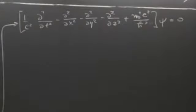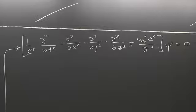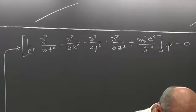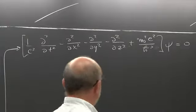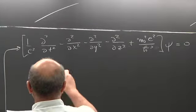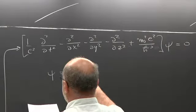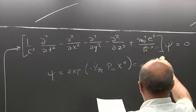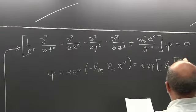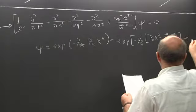This is not really a derivation — we postulate this equation, just as we postulate the Schrödinger equation; the Schrödinger equation is also not derived. What we have to show is that solutions of this equation describe some physical system. For the free particle — there is no potential, only the mass — if we take solutions of the form exponential of minus i/h-bar times p_mu x^mu.